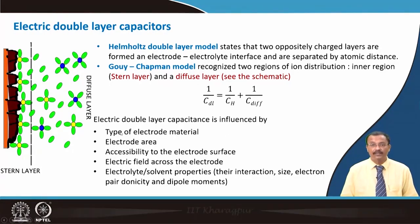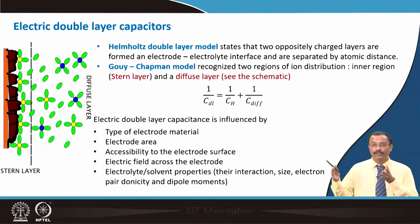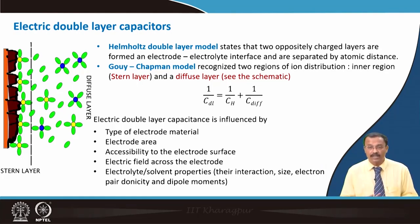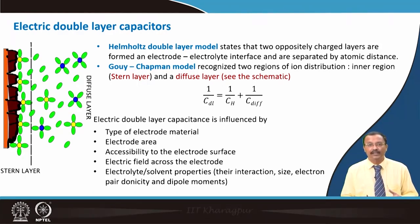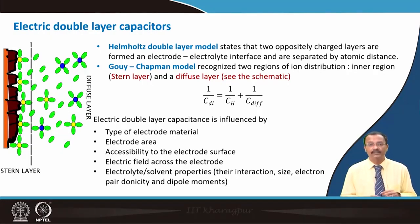The electric double layer capacitance is influenced by the type of electrode material, how the electrolyte penetrates, how much surface area is available, and how many counter ions can be absorbed. Electrode area plays a major role, not only the material. Accessibility of the electrode surface, electric field across the electrode, and electrolyte solvent properties — including their interaction, size, electron pair donicity, and dipole moment — all determine the double layer capacitance.